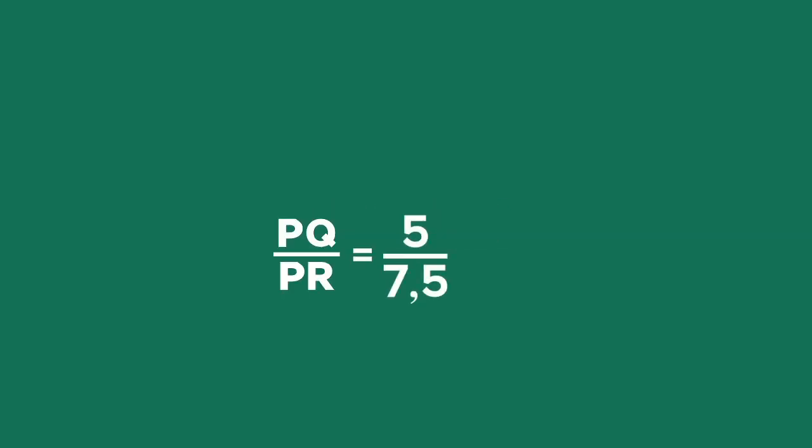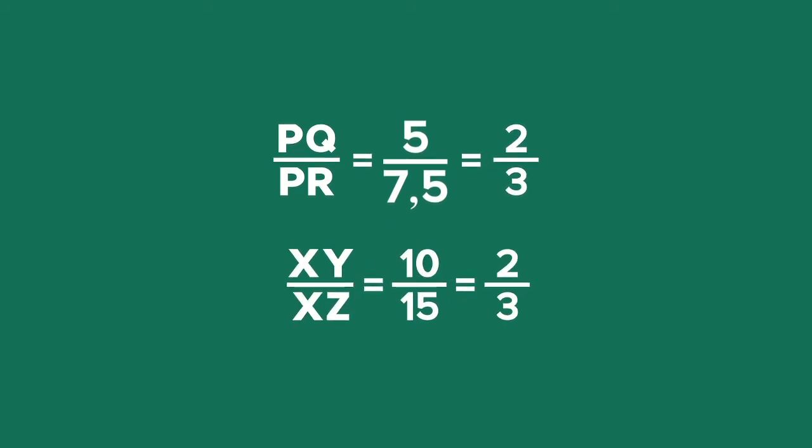Now you can check that the ratio PQ over PR which is equal to 5 over 7.5 in the simplest form is equal to 2 over 3. This is the same as the ratio of XY over XZ.